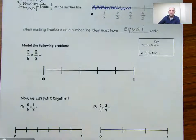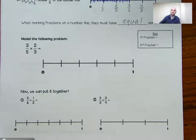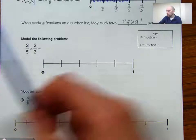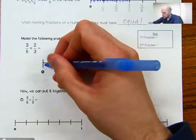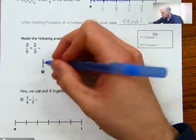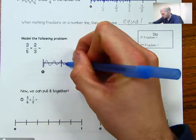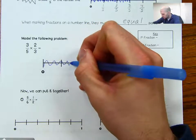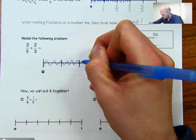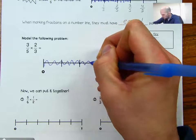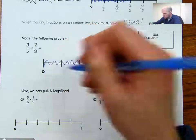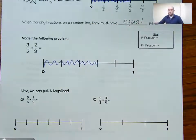So it says model the following problem: three-fifths times two-thirds. In blue, I'm going to shade three-fifths — shade three of these. So three-fifths shaded in.